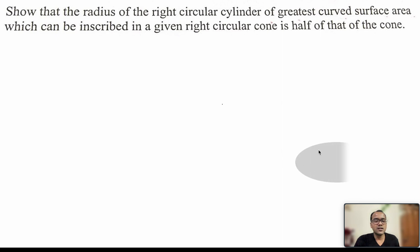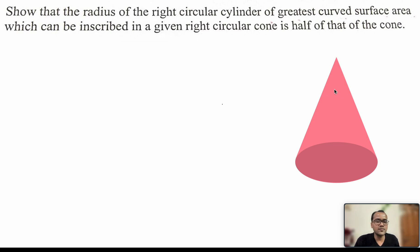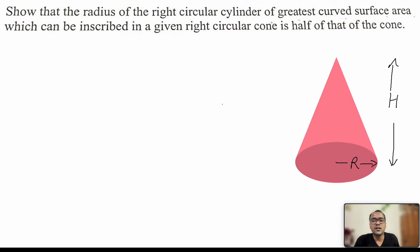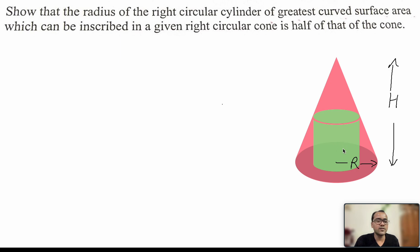So let us suppose this is our cone. The height and radius of the cone are given — suppose the height of the cone is capital H and radius of the cone is capital R. Inside this cone, we have to inscribe a right circular cylinder. We have to prove that if the curved surface area of this cylinder is maximum, then the radius of the cylinder will be half of capital R.